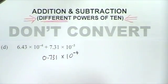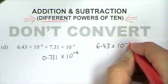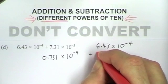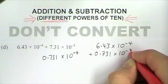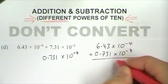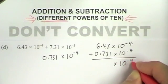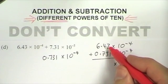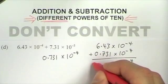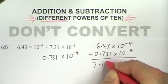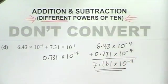Those are the numbers I'm going to add together. So I'm going to do 6.43 times 10 to the minus 4 added to 0.731 times 10 to the minus 4. The powers are the same, so when I add them I'm going to get the answer being 10 to the minus 4 also. And 6.43 plus 0.731 gives me 7.161 times 10 to the minus 4.